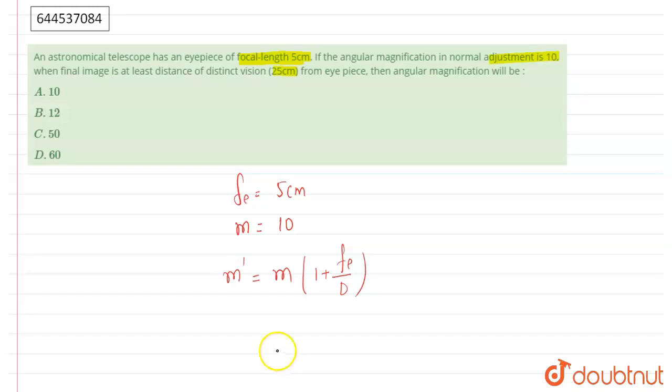Now we will put the values of M, Fe, and D here. D is 25 centimeters. So M is 10, 1 plus Fe is 5 centimeters, D is 25.